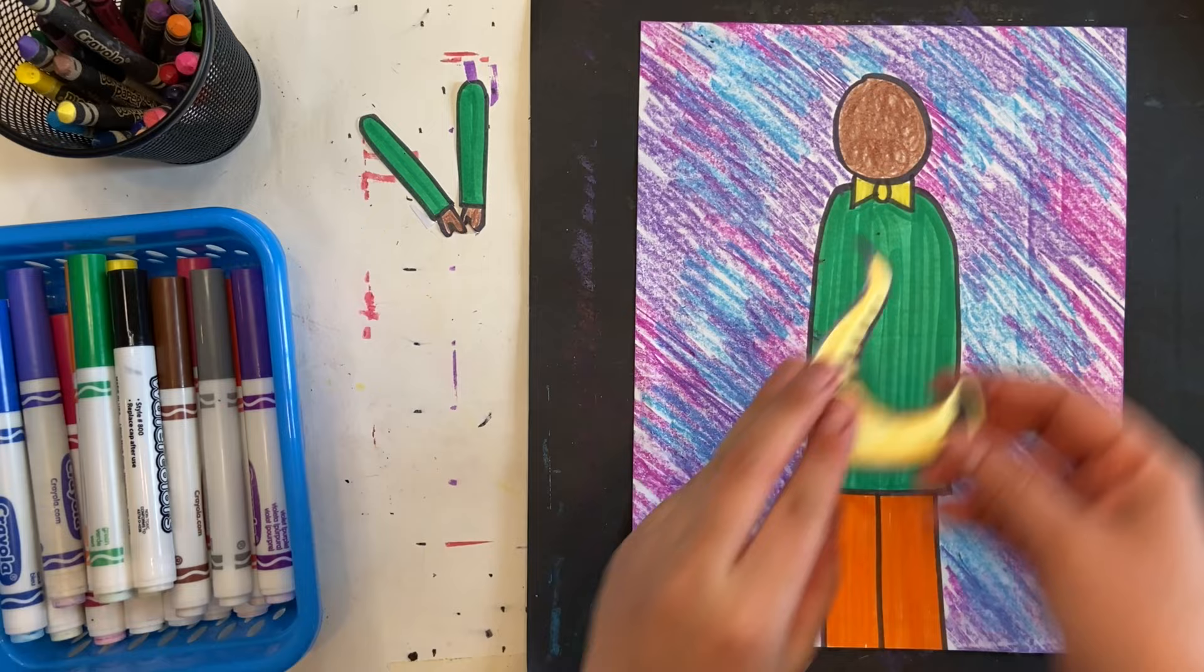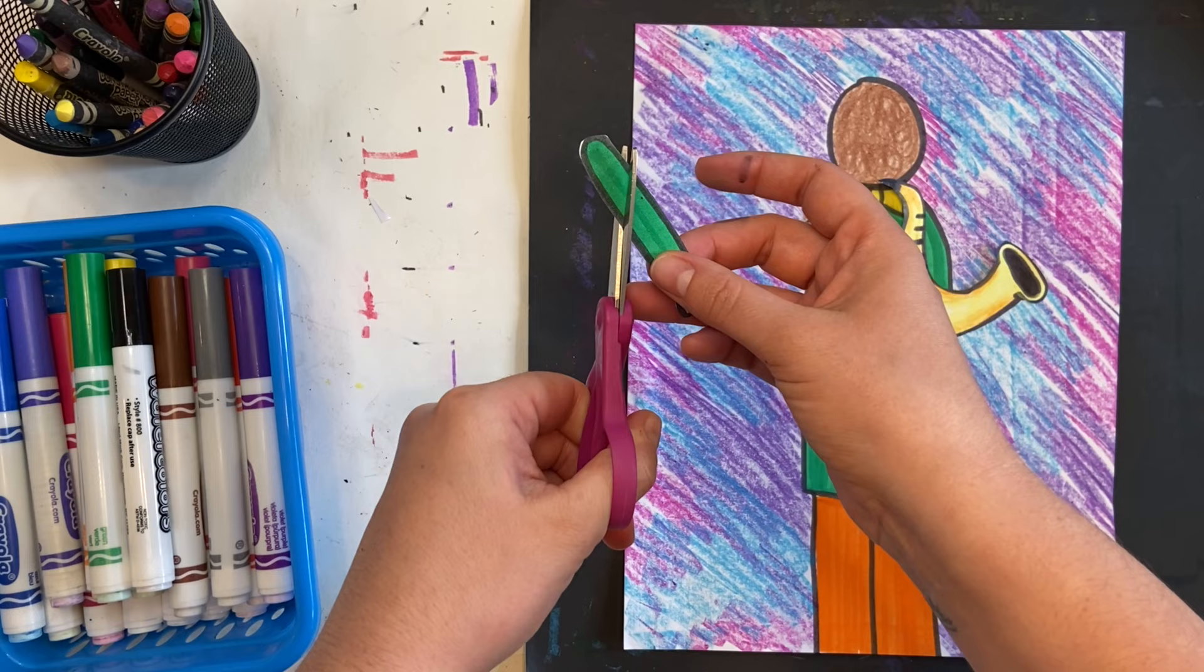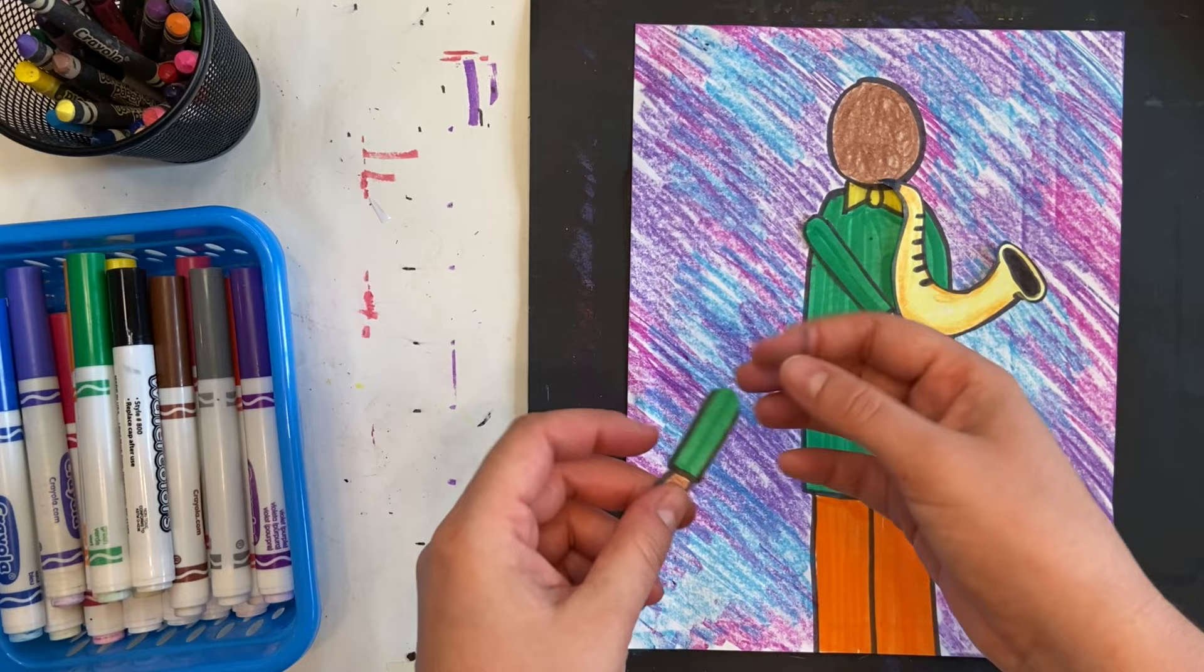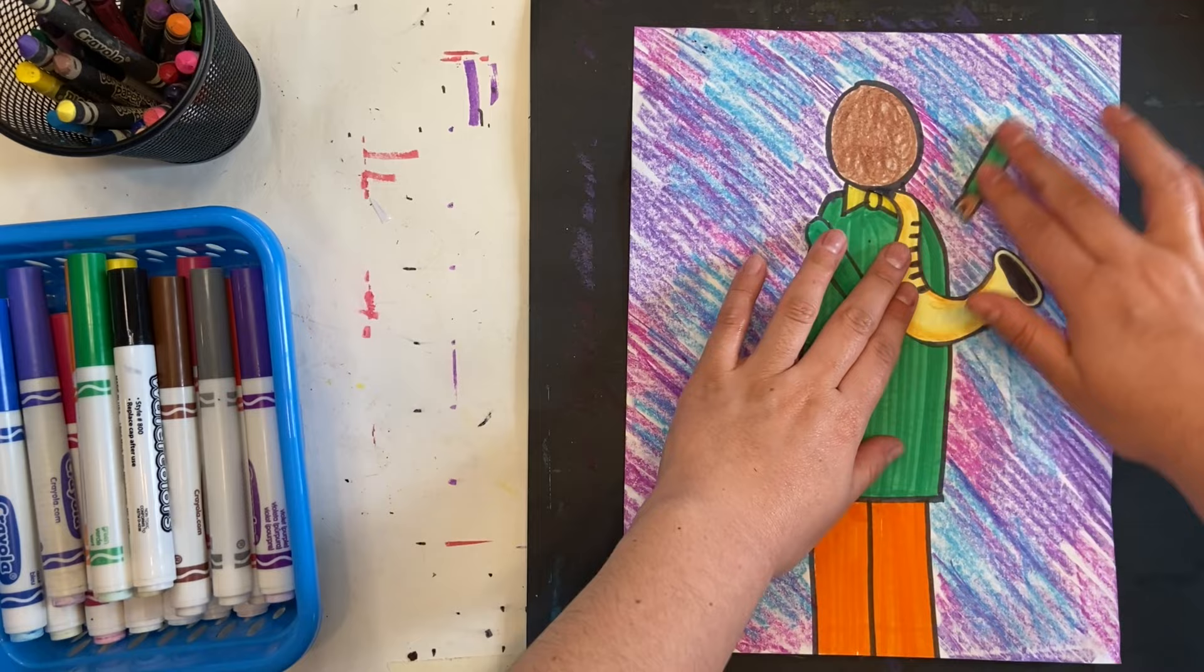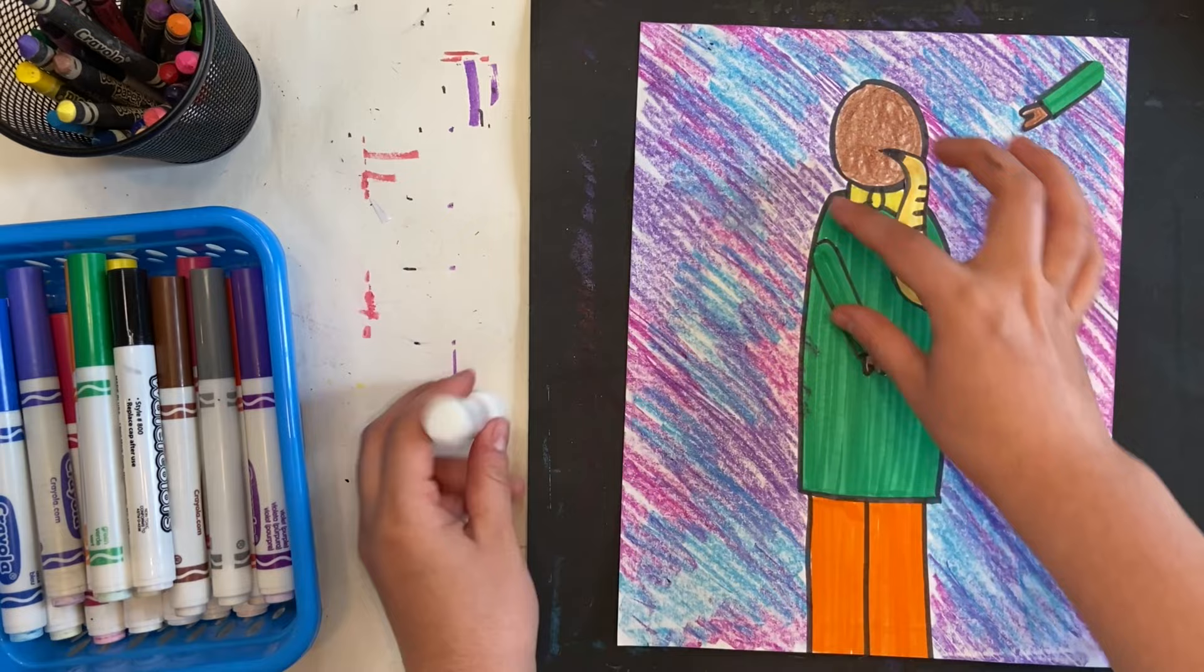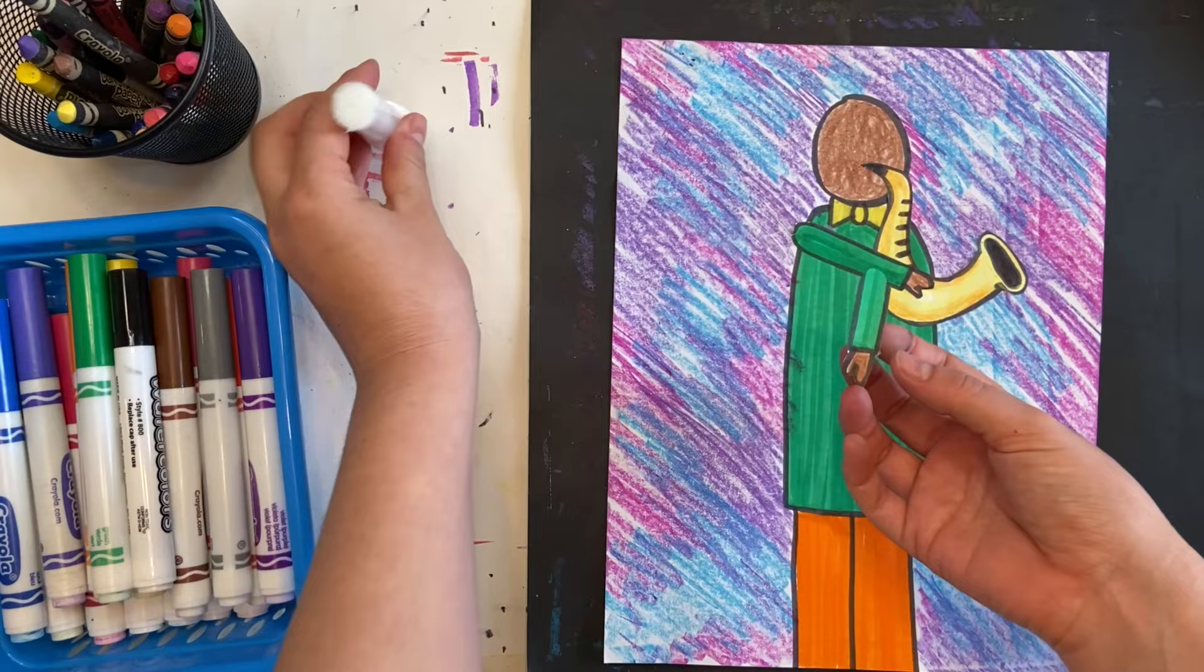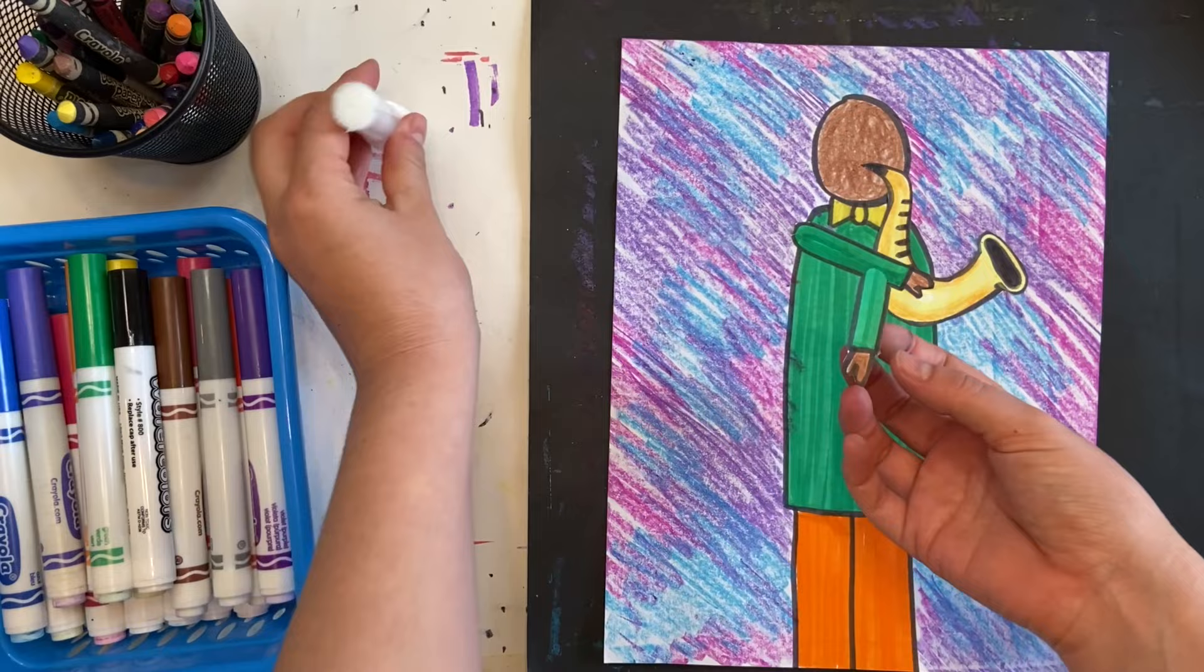I'm going to start by positioning everything where I want it to go. My arm and my hand should be near the instrument. See how this arm is a little bit too big? So, I'm just going to take my scissors and cut one of my arms a little bit shorter. Now, it looks like the arm is bent, and you can only see it from the elbow. It kind of depends on what instrument you picked for your musician to play. When you have a rough idea of where you want your arms to go, you can glue everything down so that you have your jazzy musician.